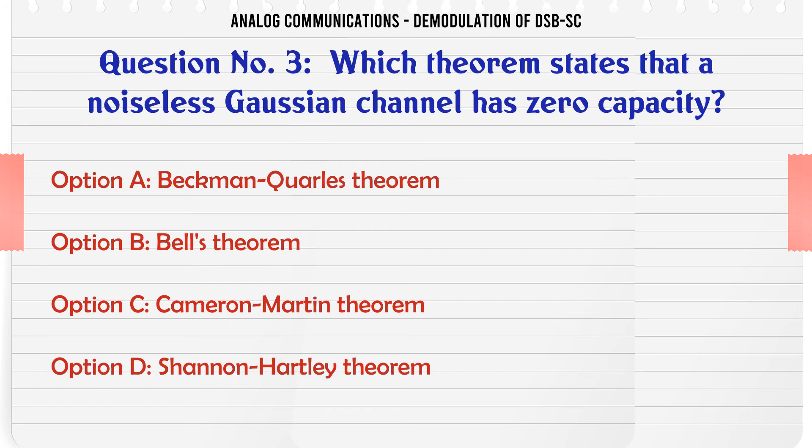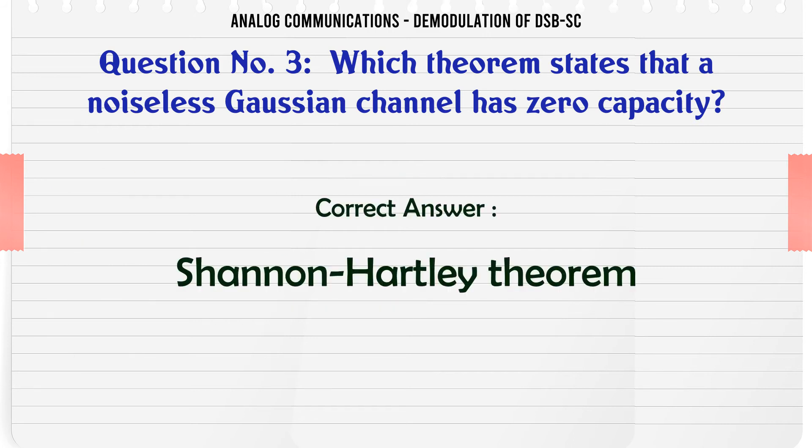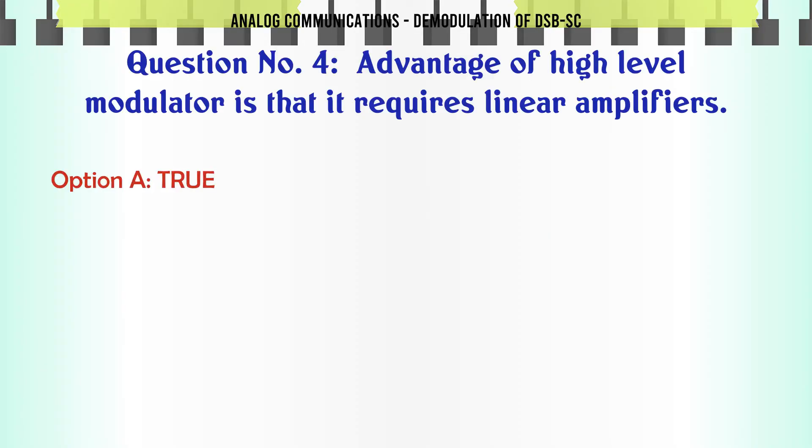The correct answer is Shannon-Hartley theorem. Advantage of high level modulator is that it requires linear amplifiers: A, true; B, false.